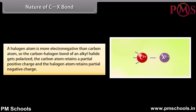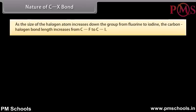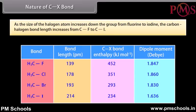Nature of C-X bond: a halogen atom is more electronegative than a carbon atom, so the carbon-halogen bond of an alkyl halide gets polarized. The carbon atom retains a partial positive charge and the halogen atom retains a partial negative charge. As the size of the halogen atom increases down the group from fluorine to iodine, the carbon-halogen bond length increases from C-F to C-I.